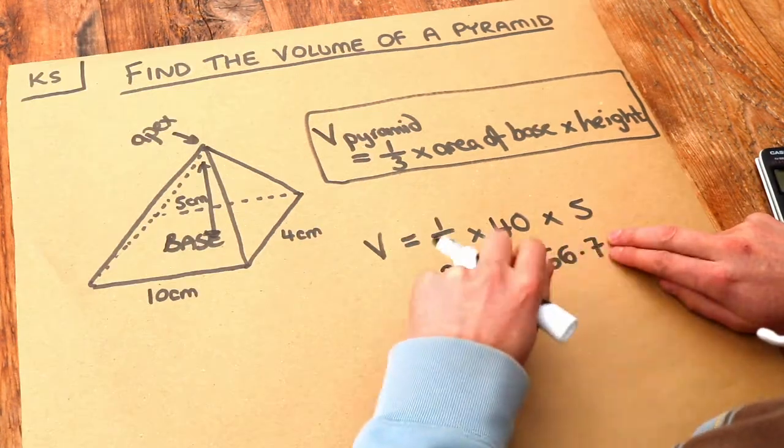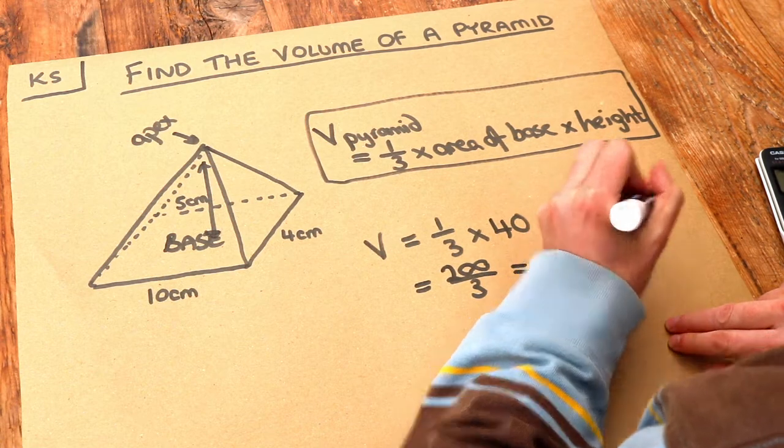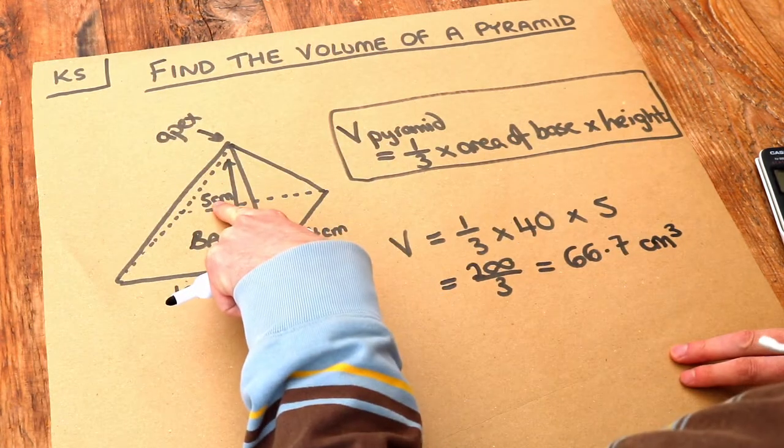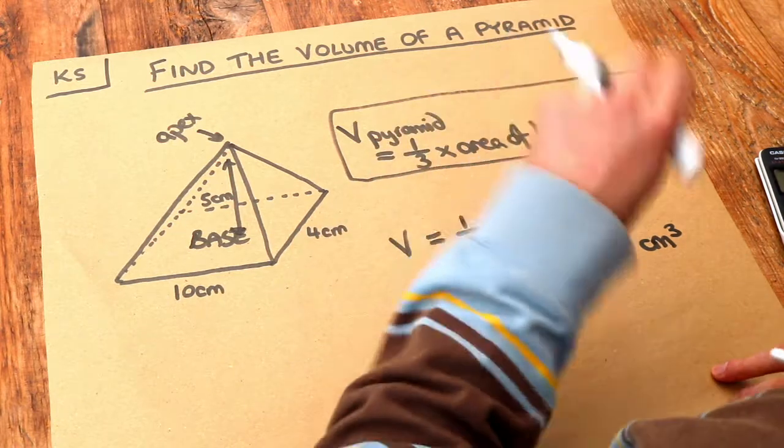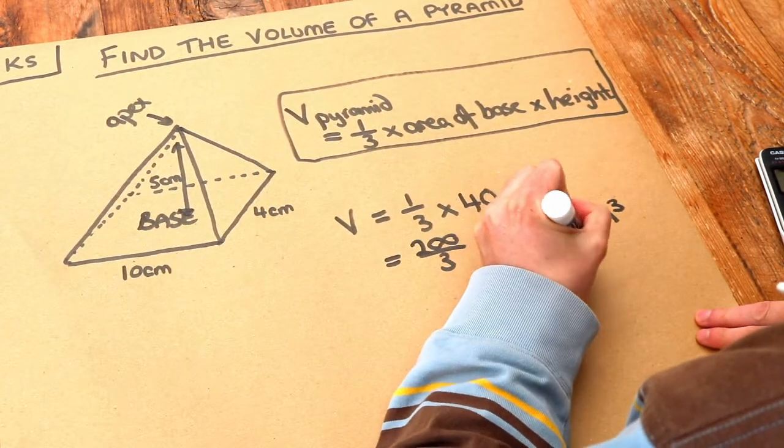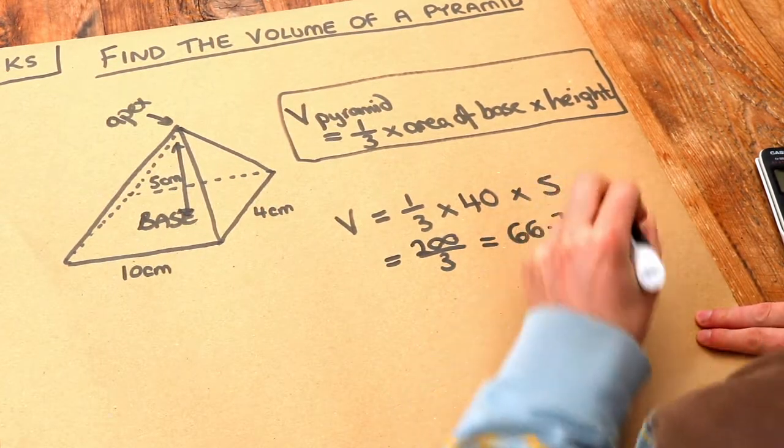And what is the unit? It's going to be centimeters cubed because these individual lengths are in centimeters and volume is in a unit cubed. And this was to three significant figures, and that's the final answer.